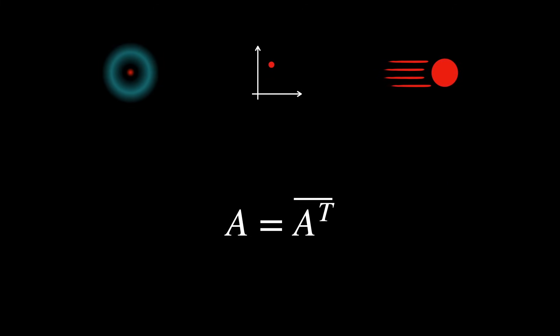Things that are considered physical observables like energy, position, momentum, and so on, are all eigenvalues of special matrix transformations called Hermitian matrices.